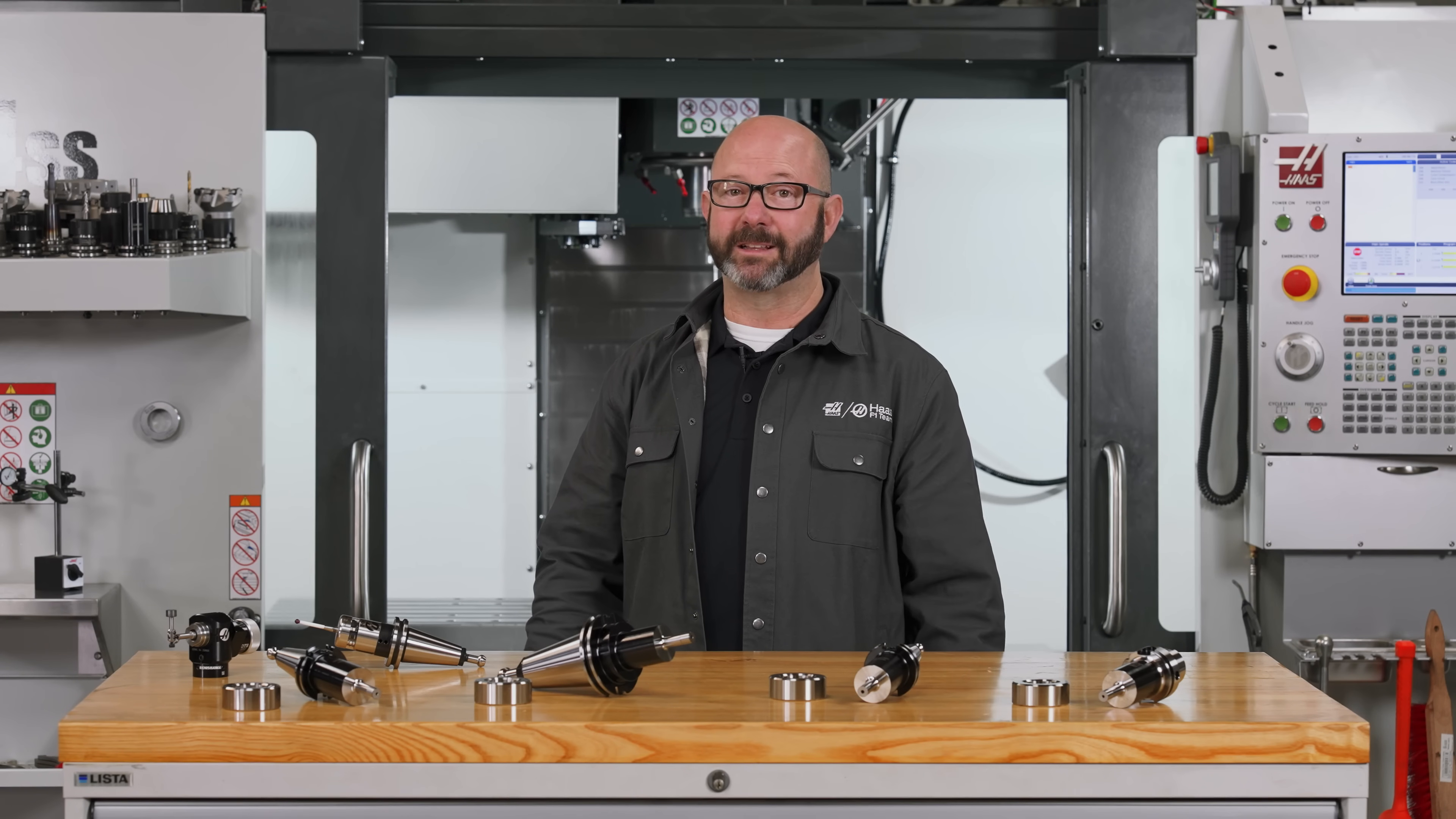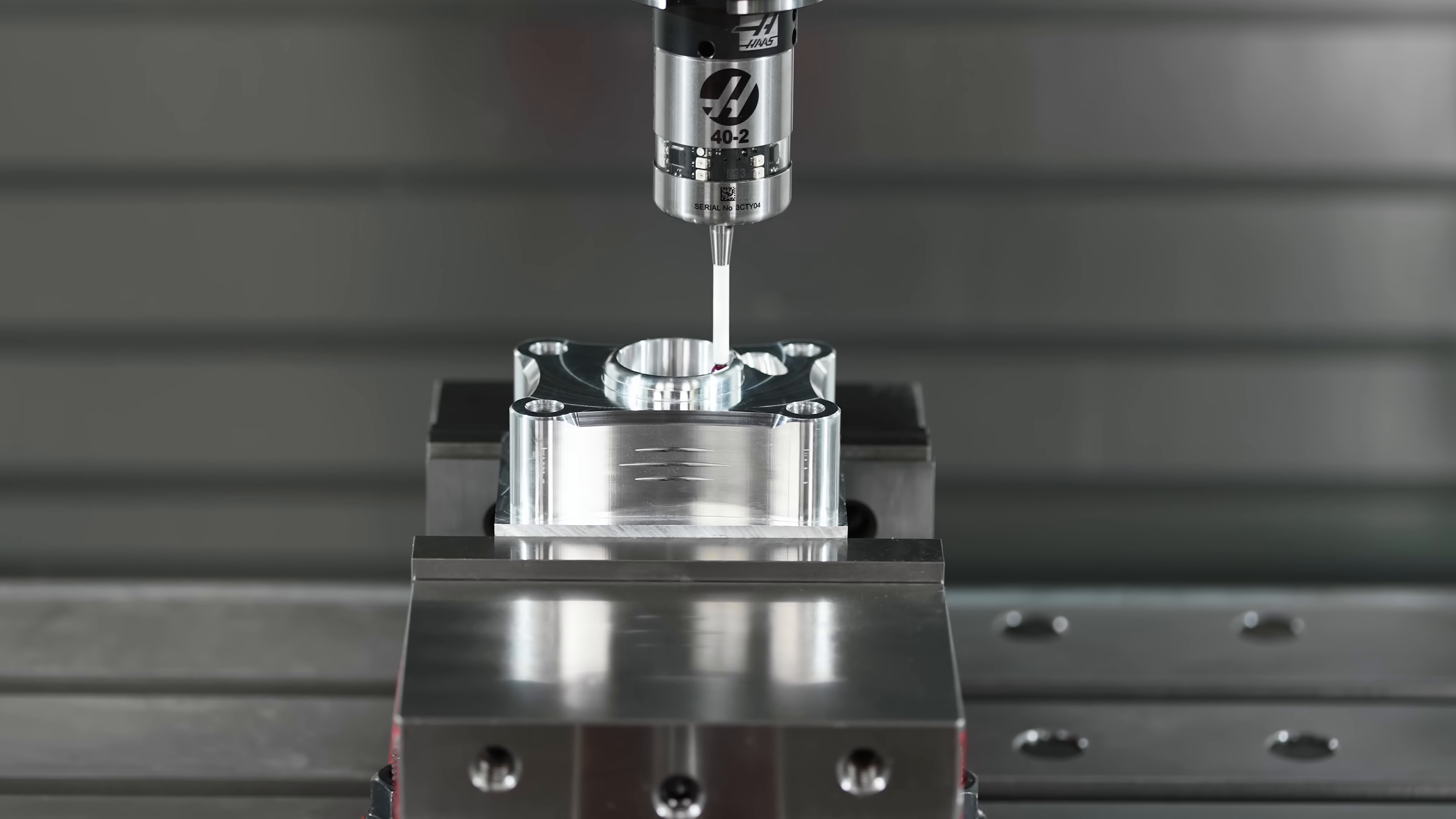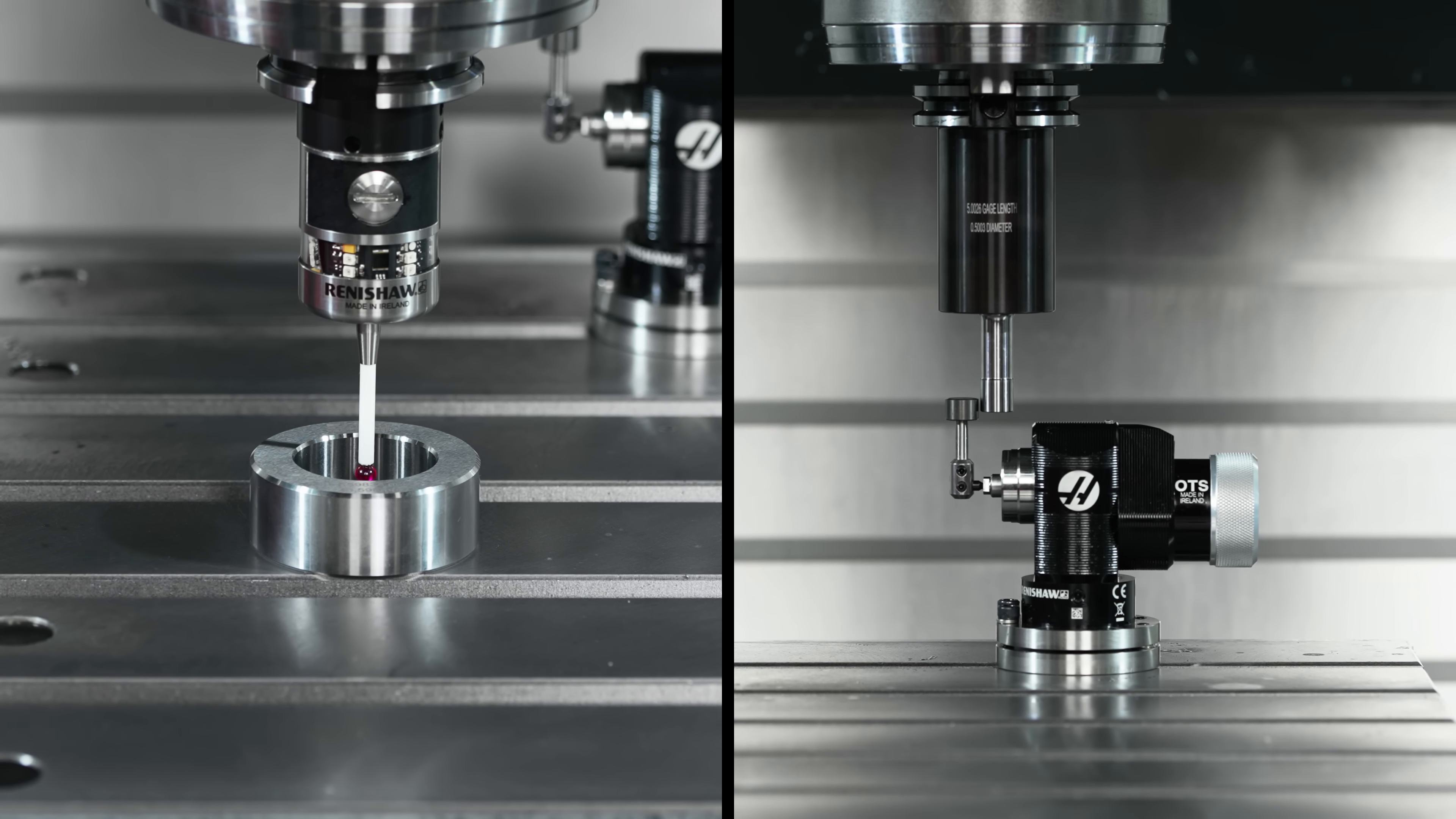Probing is basically magic. Beep beep and our offsets are set. Another beep beep beep and our parts are measured. Now none of this magic is possible if our probes, both spindle and tool, are not properly calibrated.